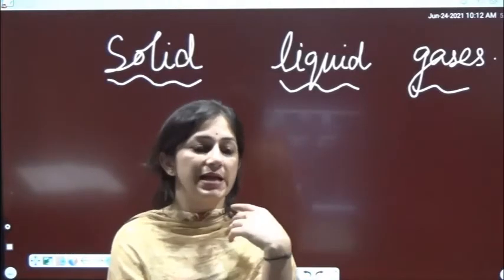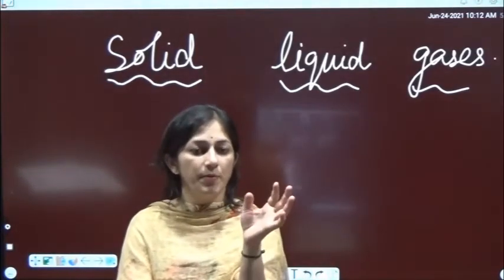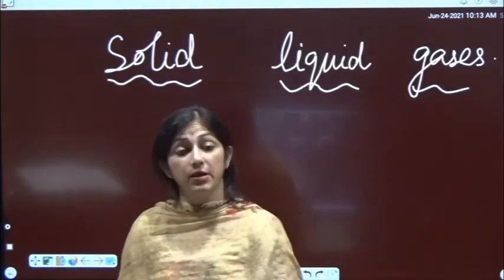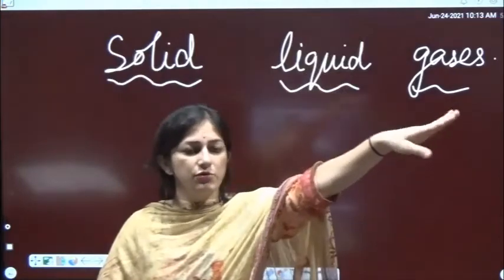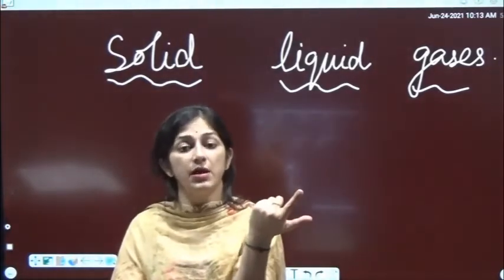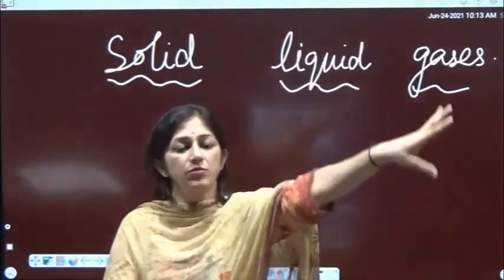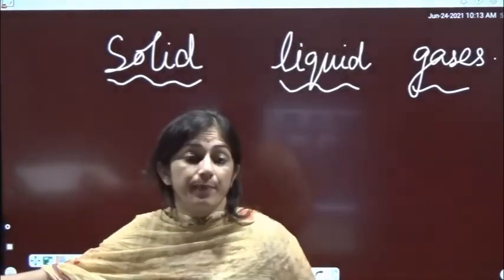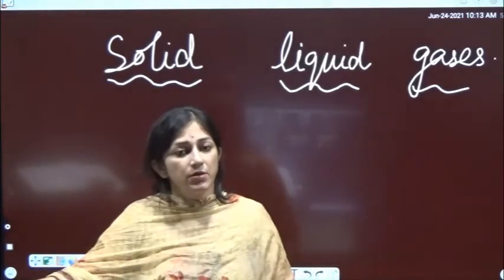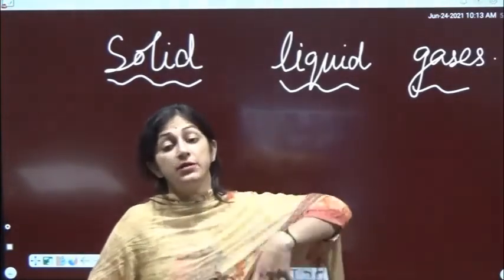Now come to gases. Gases have no definite shape, no definite volume - nothing is definite. The forces of attraction among the particles, among the molecules, among the atoms, are very weak. That's why gases keep moving - the molecules can move anywhere. If your cylinder leaks even a little, everyone nearby will know that the cylinder has leaked. It means gas leaked out and its molecules spread everywhere. The particles have no attraction with each other - they have no bond among them, so they keep moving here and there. Clear?